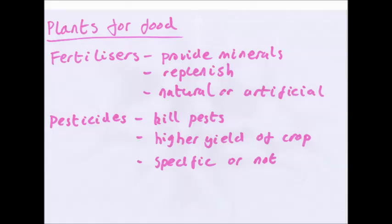When plants take up minerals from the soil, if you have a crop in that soil year upon year, it will use up all the minerals and plants will die. Fertilisers replenish those minerals so they don't limit the growth of the next crop. These minerals include nitrates, phosphates, and potassium. Pesticides kill pests that feed on crops, so fewer damaged or destroyed plants means a higher yield. Pests can be microorganisms, insects, or mammals like rats. You can have pesticides specific to one species or broad pesticides that kill a range of species. Broad pesticides can harm non-pest species, so they're not as good.